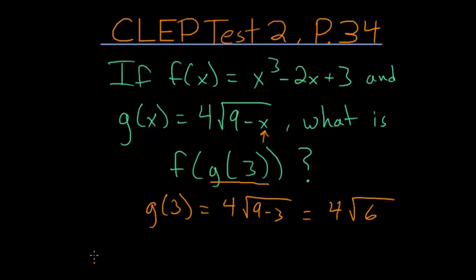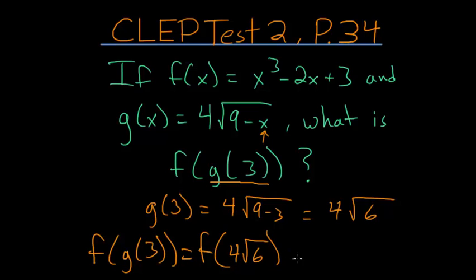Now f of g of 3 is the same thing as f of 4 root 6. So now we go to our function f(x), and anywhere we see this x, we'll plug in 4 times the square root of 6.